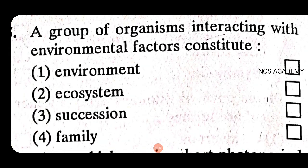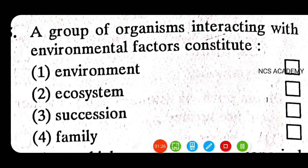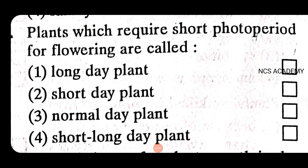A group of organisms interacting with environmental factors constitutes an ecosystem. The right answer is ecosystem. Plants which require a short photoperiod for flowering are called short day plants — that is the right answer.